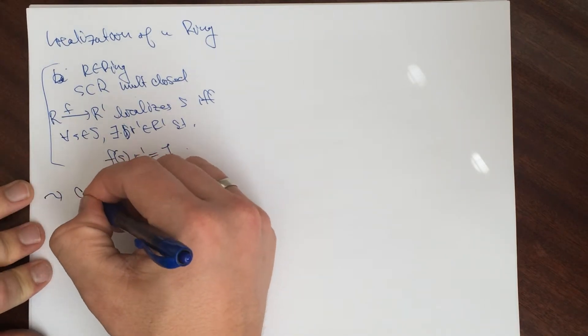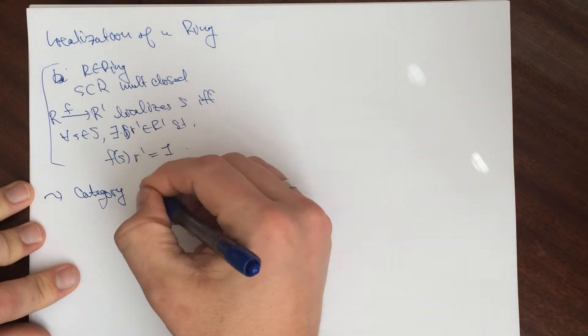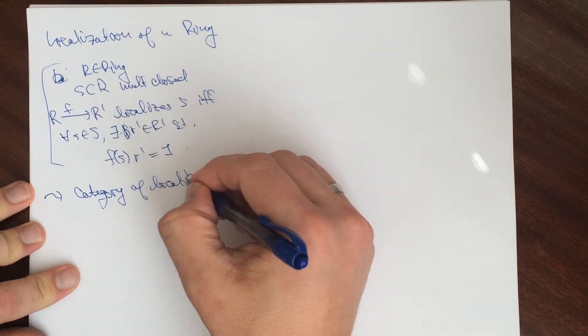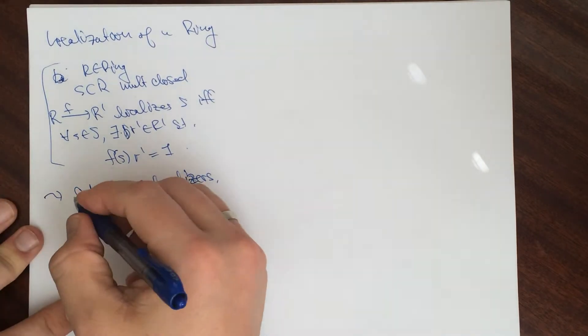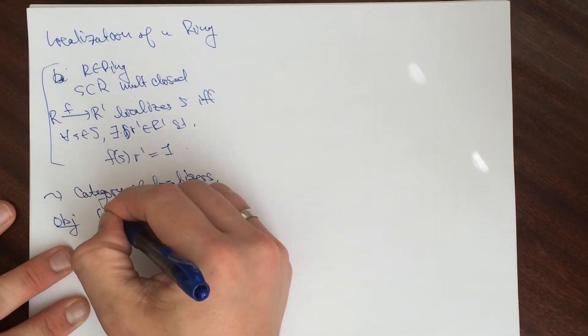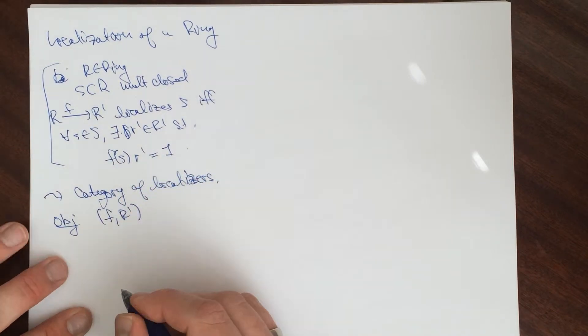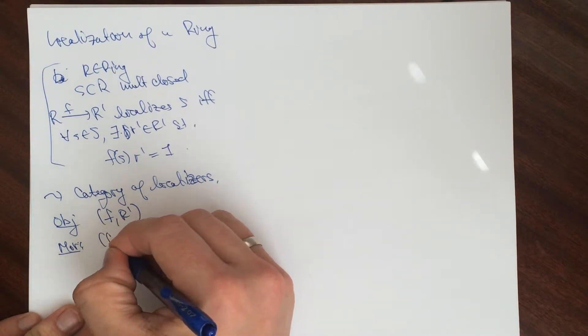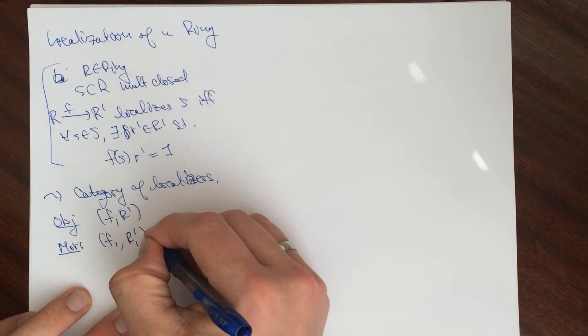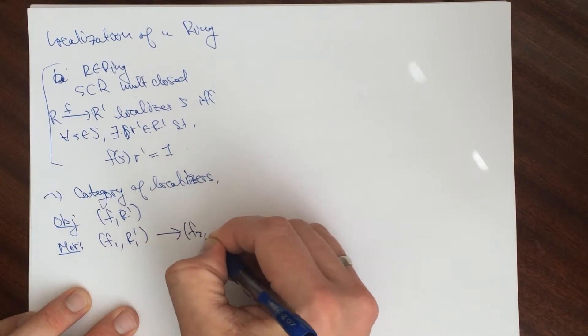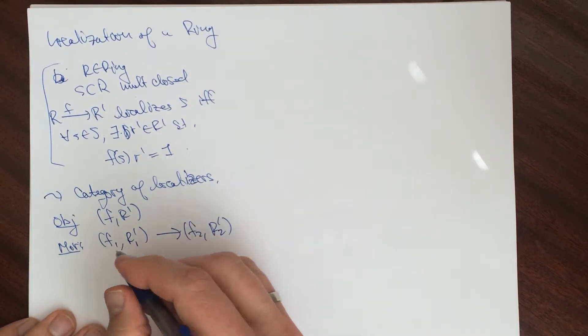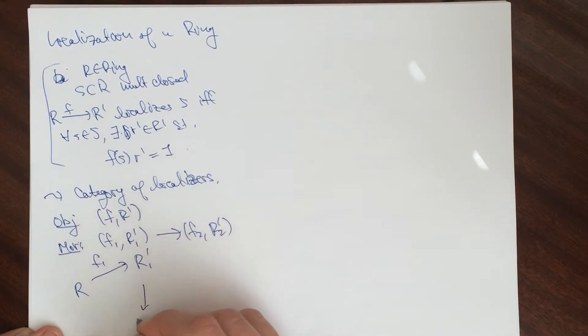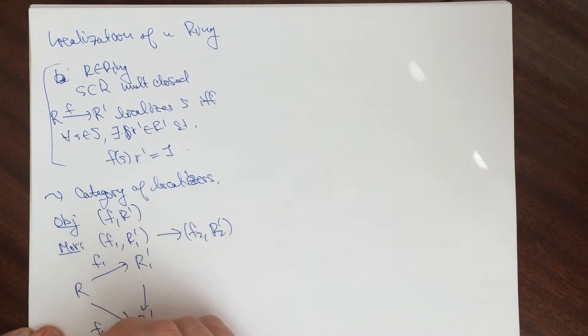Then we can form a category of localized rings. Localizers, I guess. The category of the objects here are pairs of F and R' and R' and then morphisms are, let's say F1 R'1 to F2 R'2. These are going to be, here's our setup. We have F1 R'1. R'2 F2.